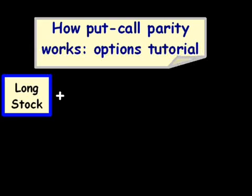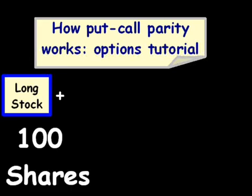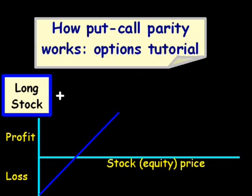To start off, we have a long stock — and by long stock, I mean long 100 shares, because a call and a put option are for the right to buy or sell 100 shares — and our payoff looks something like this. We have our profit on the right side, and our loss on the left side, and that will be a function of what happens to the stock price or the equity price.